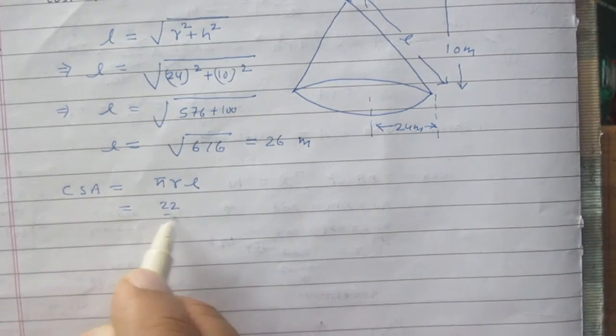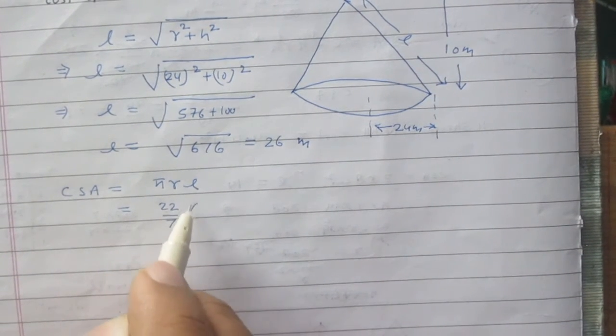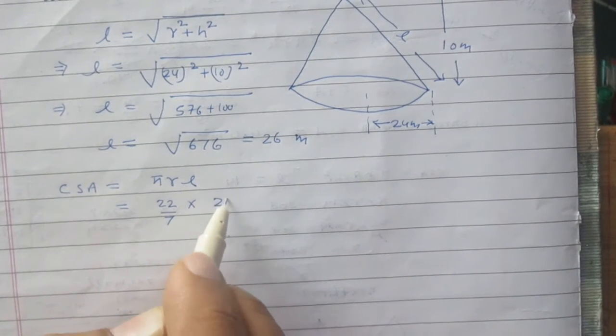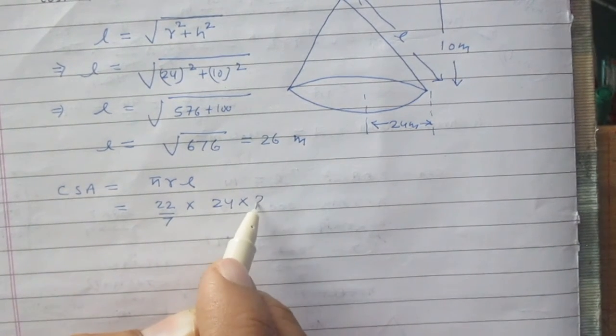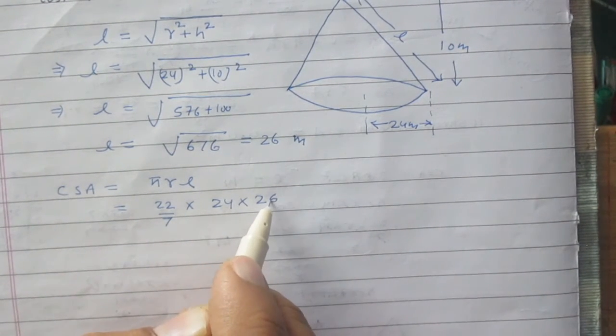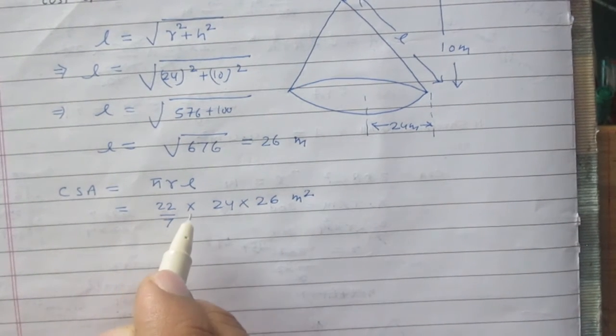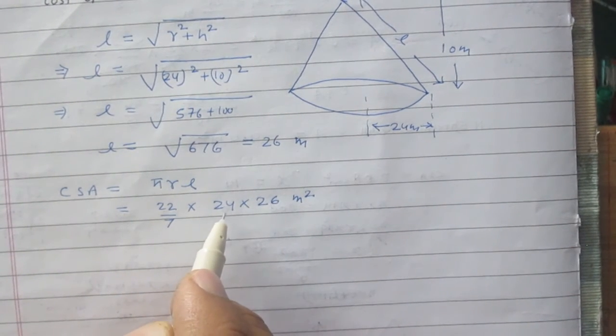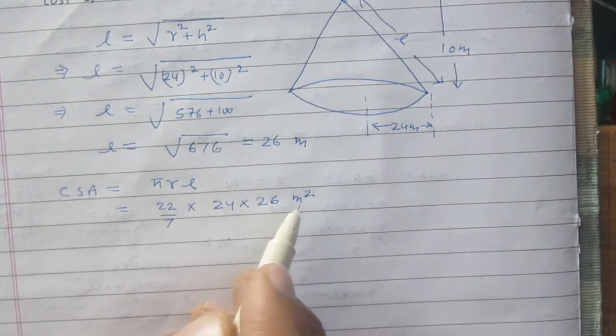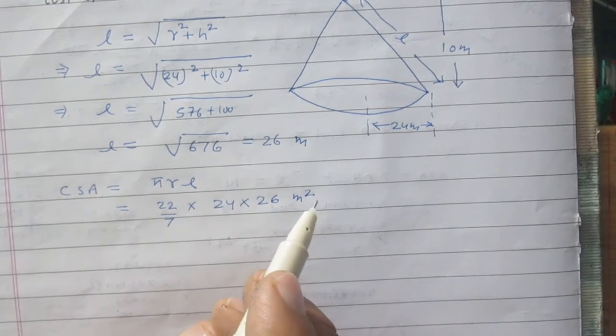So it is 22 by 7, which is the value of pi, radius is 24, slant height we have just calculated is 26. So we can say that curved surface area is 22 by 7 multiplied with 24 multiplied with 26 meter square.